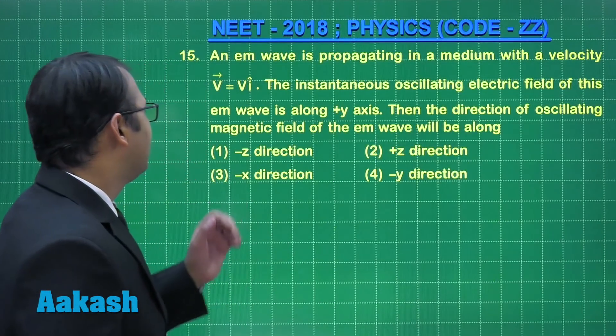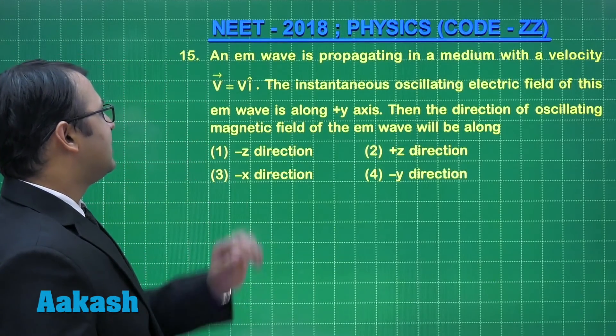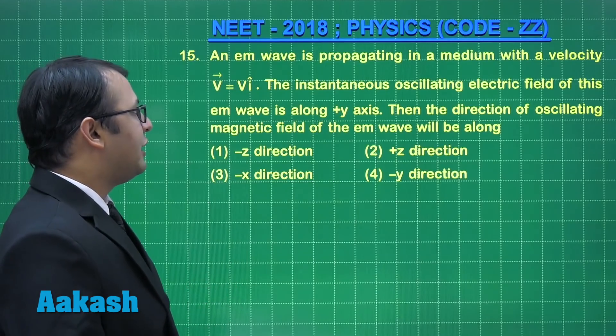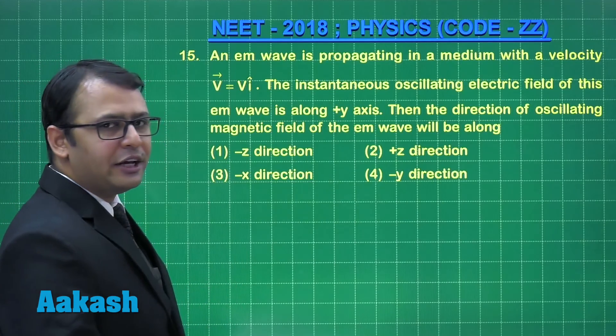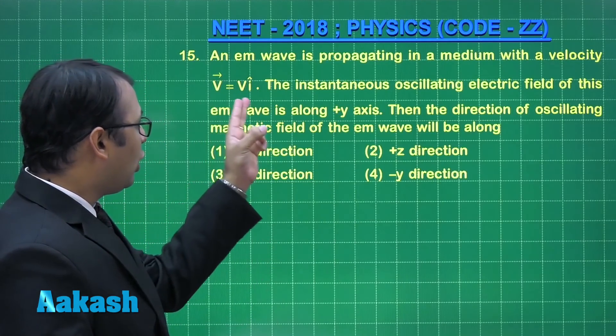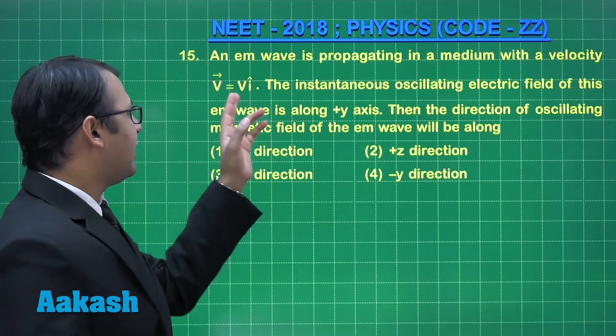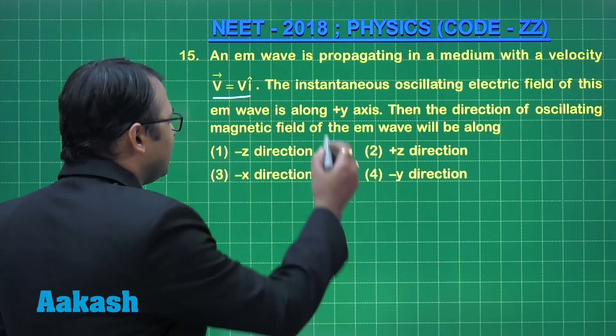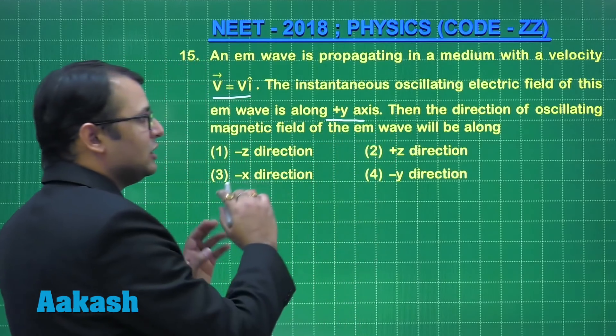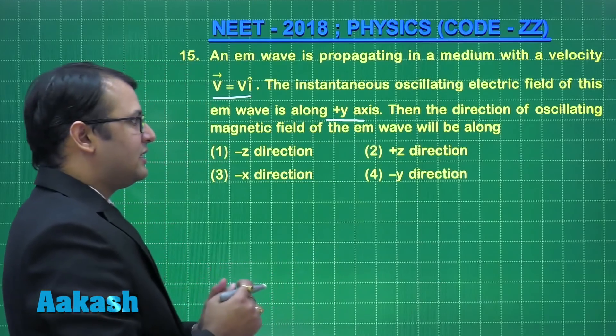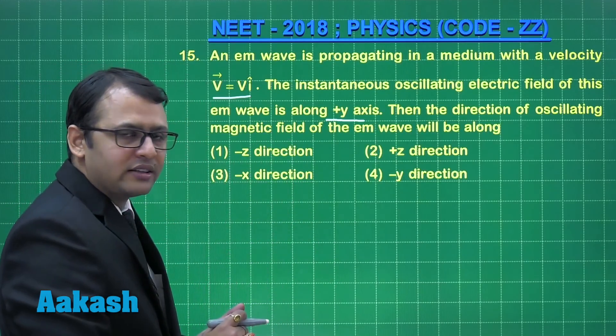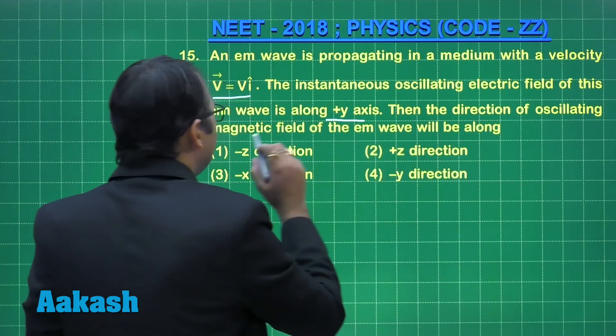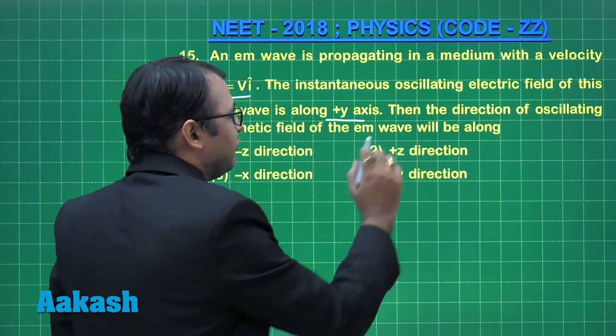Let's start with question number 15. The question says that there is an electromagnetic wave which is propagating in a medium with velocity v along x-axis. Now the instantaneous oscillating electric field of this wave is along y-axis, so the wave is moving along x-axis and electric field is along y-axis. The direction of oscillating magnetic field of the EM wave will be what?